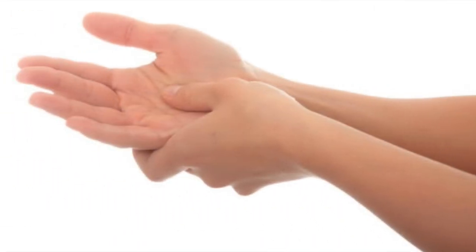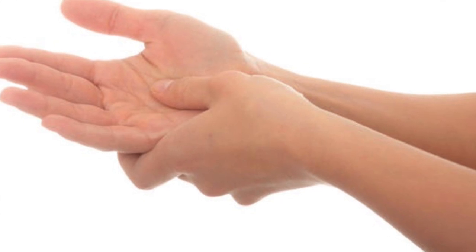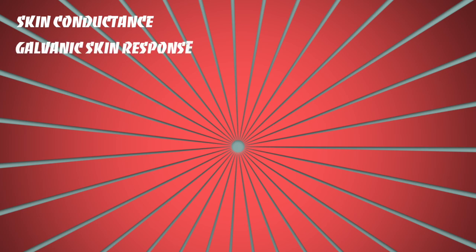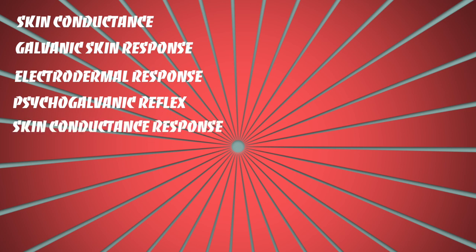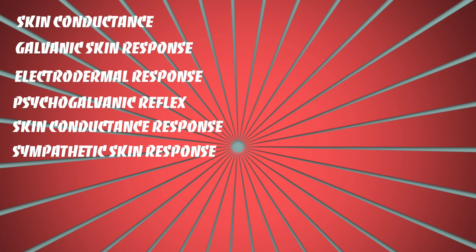So there's this phenomenon that describes the property of human skin to have this sort of continuous variation in electrical characteristics. It's been studied for about 170 years, and over the years it has had all these different names: skin conductance, galvanic skin response, electrodermal response, psychogalvanic reflex, skin conductance response, sympathetic skin response, and skin conductance level. Basically, it all describes the same phenomenon about the electrical conductivity in human skin.